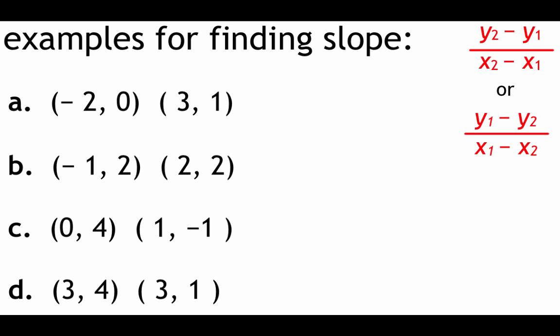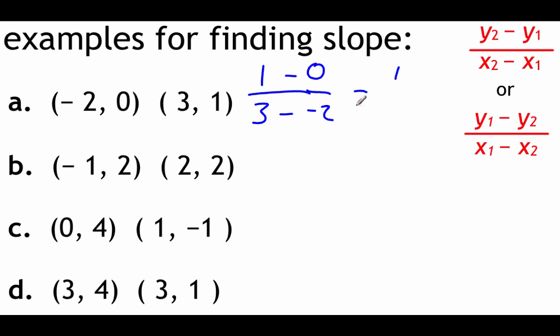I'm going to run through these four examples — feel free to pause the video to try these on your own and then start it back up to check your answers. Looking at letter A, we've got negative 2, 0 and 3, 1. Across the top we subtract our y's first: 1 minus 0. Since I used the 1 first on top, I have to use the 3 first on bottom, minus negative 2. Across the top, 1 minus 0 is 1. Across the bottom, 3 minus negative 2 — double negative is a positive — so we get 5 across the bottom. So that one has a slope of 1 fifth.